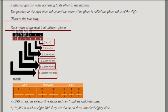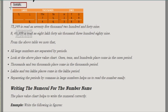Now let's take an example. We'll take the number 75,249. The digit 9 is in ones place, 4 is in tens place, 2 is in hundreds place, 5 is in thousands place, and 7 is in ten thousands place. We place all the digits in the place value chart accordingly.